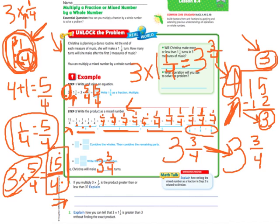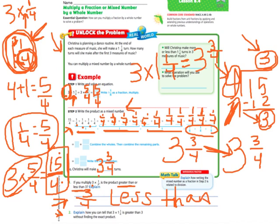For questions 1 and 2: if you multiply 3 times 1 fourth, you do whole number times numerator — that's 3 — and the denominator stays the same, so you get 3 fourths. Is that less than or greater than 3? Well, 3 fourths is less than 3. For question 2, explain how you can tell 3 times 1 and 1 fourth is greater than 3 without finding the exact product. Because 3 times 1 is already 3, and we also have 1 fourth added on, which pushes us over 3.